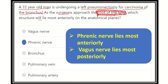Which structure lies most anteriorly in this anatomical plane? There are two important positions: one is anteriorly and another is posteriorly. The phrenic nerve lies most anteriorly. On the other hand, the vagus nerve lies most posteriorly. These two points are very important to remember.